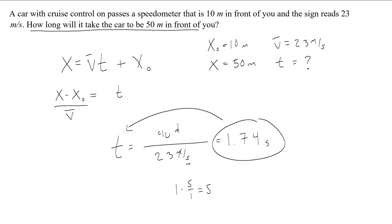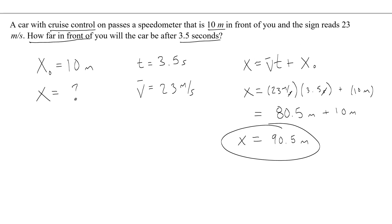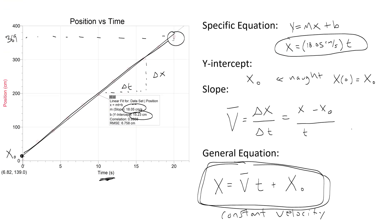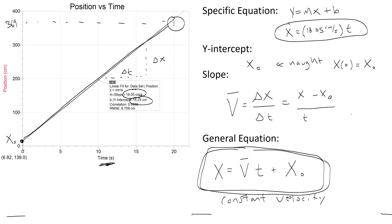Congratulations, you have analyzed your constant velocity car lab and you've learned how to use this equation, which we got from graphing a position versus time graph for the object. So this equation is something that we can now use to solve various physics problems like we just did. Good job, congratulations, you're done.